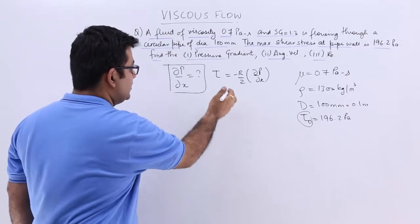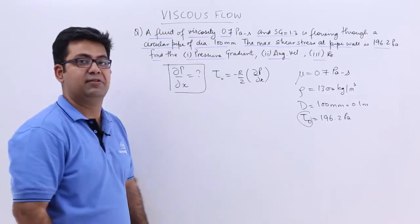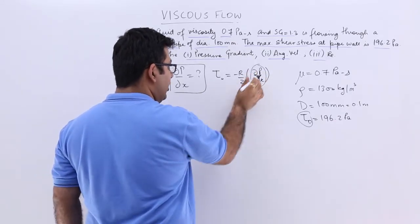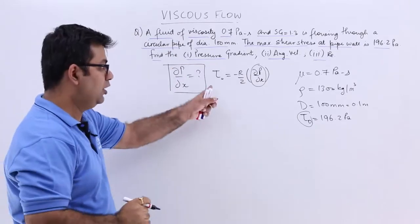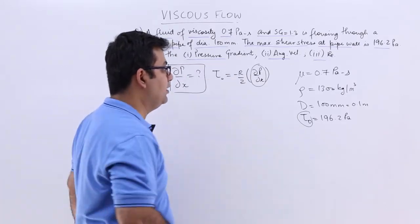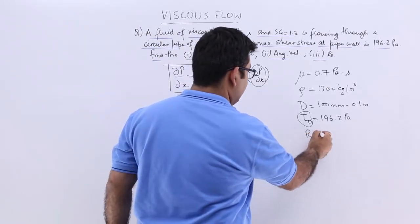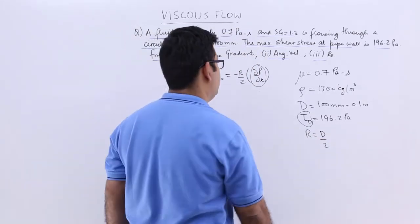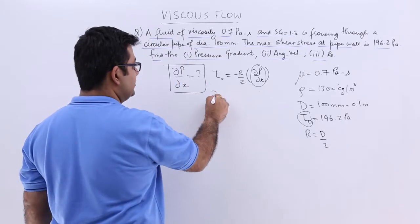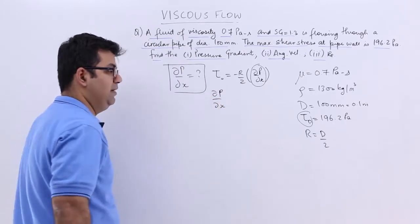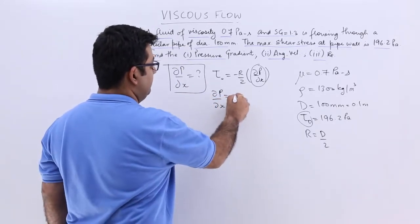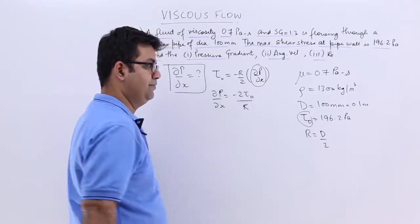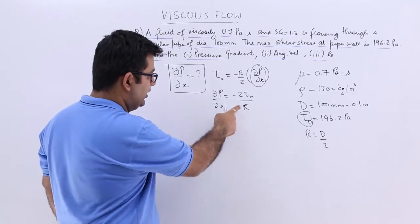So this is the maximum stress, so I will put this equal to tau 0. So let's find out this entire value from this equation. You have tau 0, you can easily find out r. r is nothing but the half of the diameter, which is 0.1 by 2, 0.05 meters. So from here I can easily find out the curly P by curly X value, which is minus 2 tau 0 upon r.